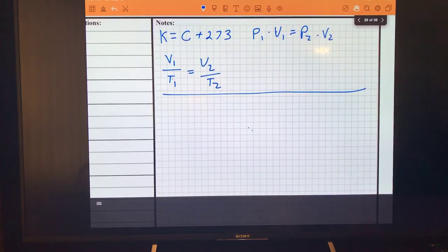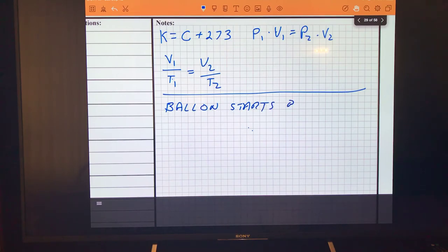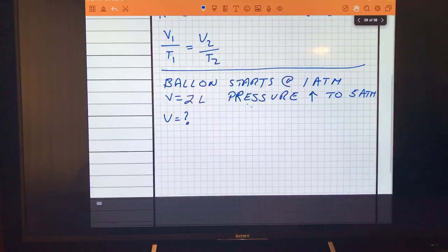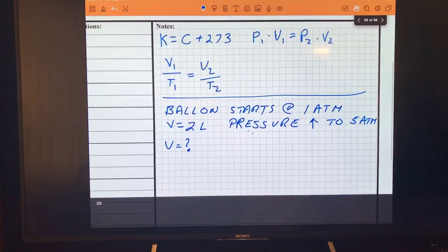So if I said that in a given problem, a balloon starts at one atmosphere with volume equal to two liters, then pressure increases to five atmospheres, I want to know what is the new volume. It's a pressure-volume problem because there's no temperature in there.